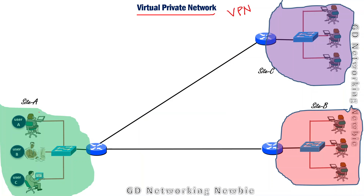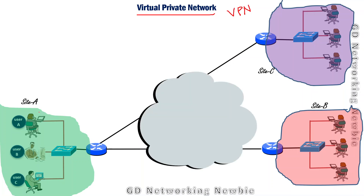A solution is to use the already existing infrastructure — the internet. The internet is a network of networks, and everyone can have access to it. So why not use this infrastructure for a site-to-site private link? The problem is that since everyone has access to the internet, anyone can potentially access our data if we use this public infrastructure.